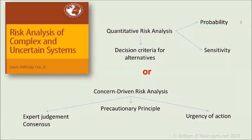Before I do that, I just want to give a plug for this book by Anthony Cox — a fabulous book, though not easy to read. The main point he makes is the split between engineering risk analysis, which is all about probability, and what he calls concern-driven risk analysis, which is about the precautionary principle. You've seen that with COVID — it had to do with the enormous uncertainty everyone had about these new diseases. Once you understand the difference between these two approaches, it enables you to do a lot more with risk management. Ultimately, risk for events gets down to people.